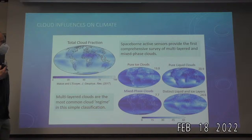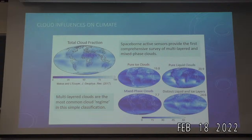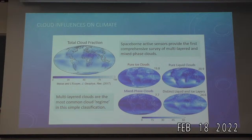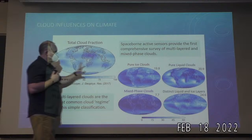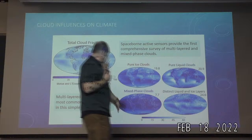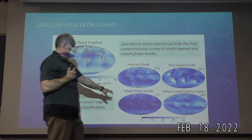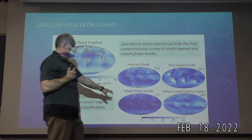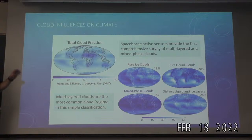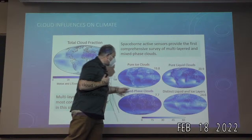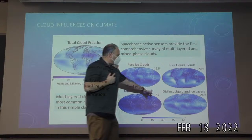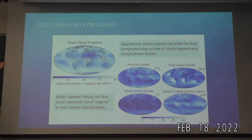My group synthesizes all this information to understand the role of clouds, aerosols, and precipitation in the climate system. PhD student Alex Madison used these sensors to understand the frequency of different cloud types: clouds made of ice, clouds made of liquid, clouds with both liquid and ice phase, and clouds with distinct liquid and ice layers. Using these new sensors, we found that mixed-phase clouds make up about 8% of global cloud cover.